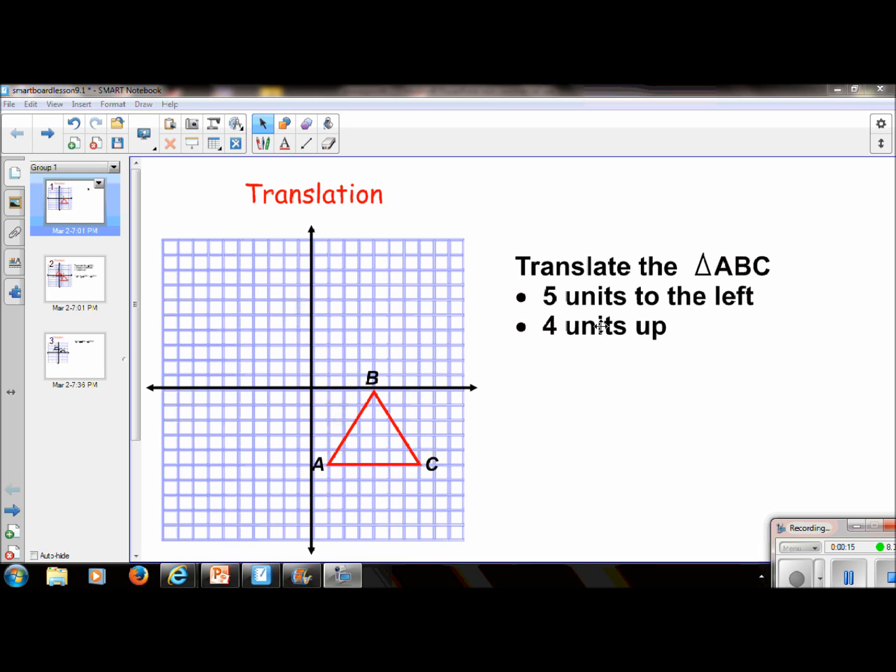So looking at point A, I am going to move it to the left 5 units. So from here, I'm going to count 1, 2, 3, 4, 5 and go 4 units up. 1, 2, 3, 4, and that is my new point and I'm going to call it A prime.